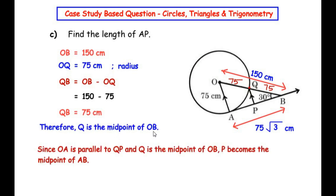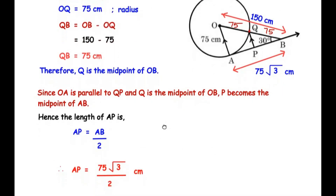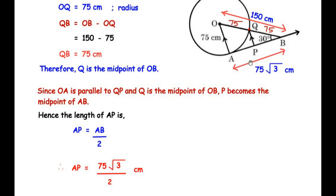Since OA is parallel to QP (given in the question) and Q is the midpoint of OB, by the midpoint theorem P becomes the midpoint of line AB. Therefore, the length of AP = (1/2) × AB = (1/2) × 75√3 = 75√3 / 2 centimeters.